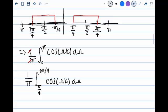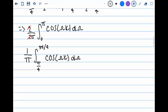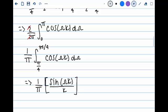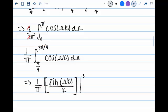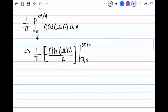Which is equal to 1 over pi times sine of omega k over k evaluated from pi over 4 to 3 pi over 4. And here we go ahead and solve out for those intervals.